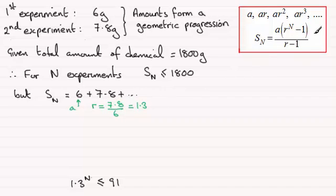Therefore, if we apply this formula for S_N, we know that A, which is 6, is multiplied by R to the power N. Well, R is 1.3, so we've got 1.3 to the power N minus 1, all divided by R minus 1, so all divided by 1.3 minus 1. That's S_N, must be less than or equal to 1,800.